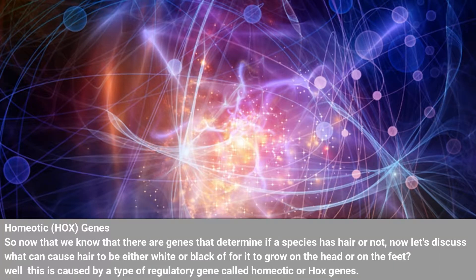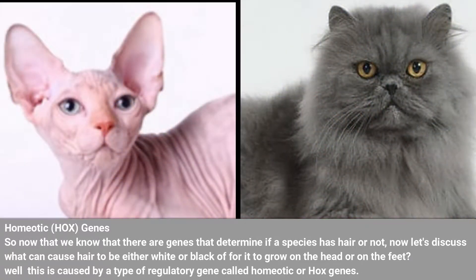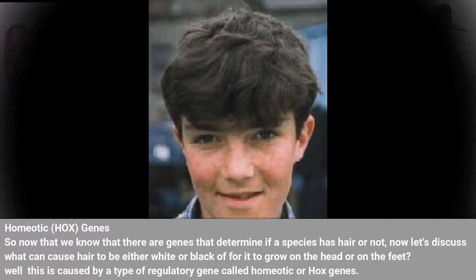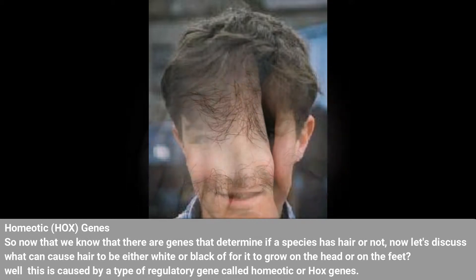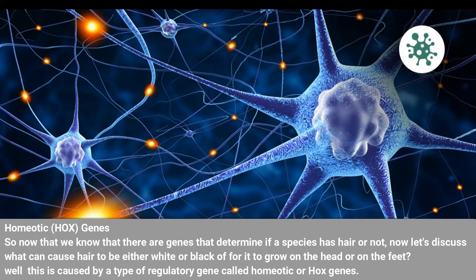Now that we know there are genes that determine if a species has hair or not, let's discuss what can cause hair to be either white or black, or for it to grow on the head or on the feet. This is caused by a type of regulatory gene called homeotic, or hox, genes.